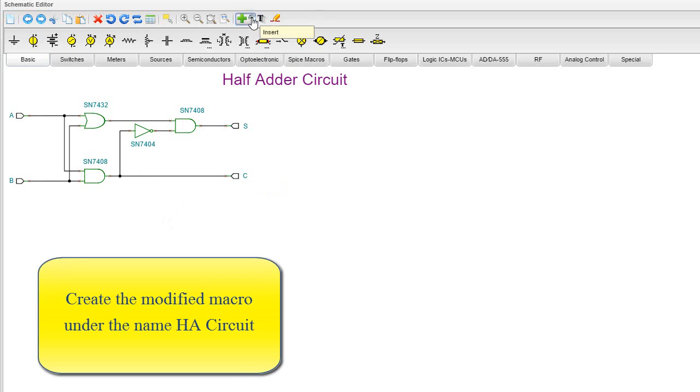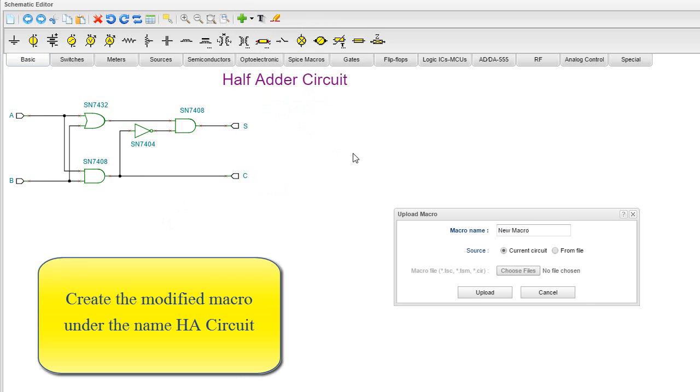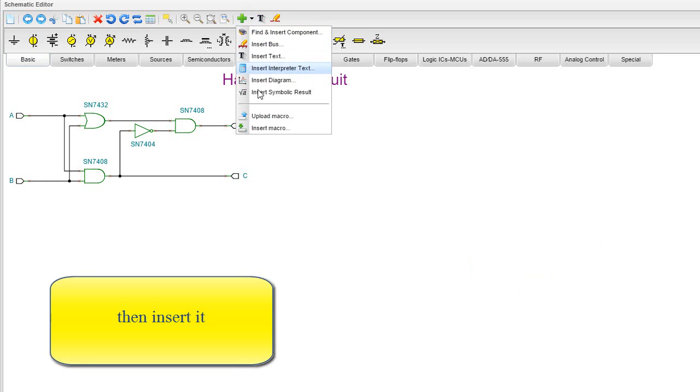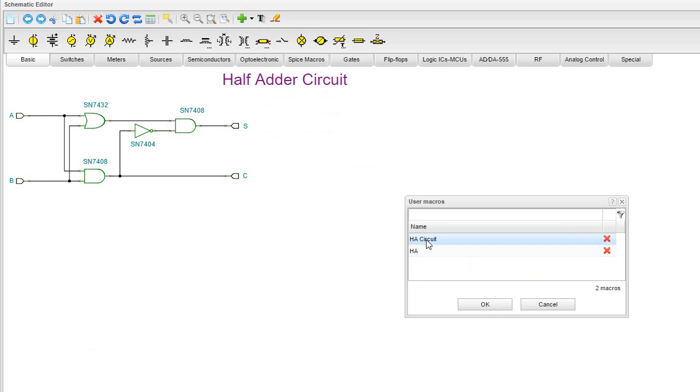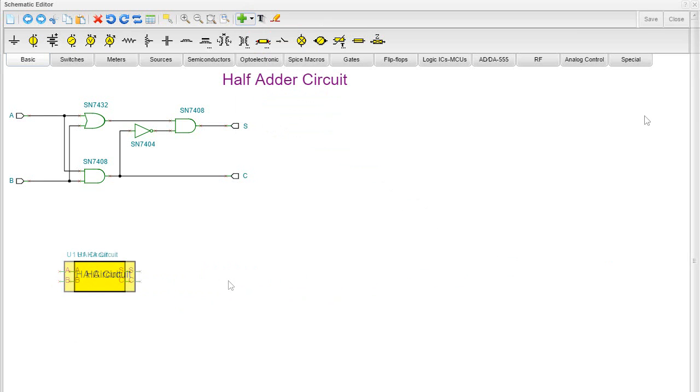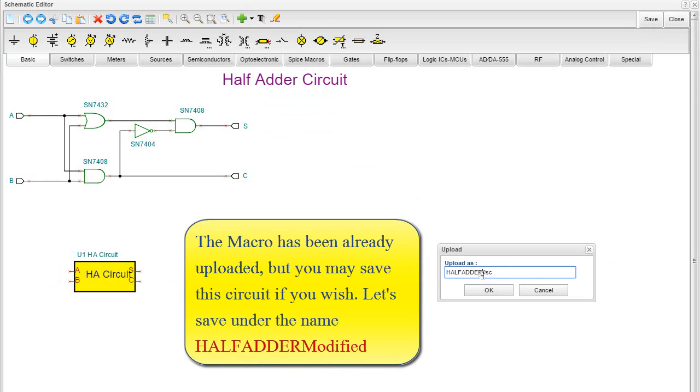Create the modified macro under the name HACircuit. Then, insert it. The macro has been already uploaded, but you may save this circuit if you wish. Let's save under the name HALF ADDER MODIFY.